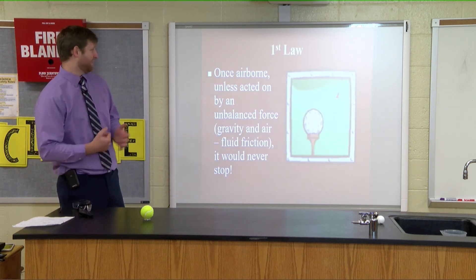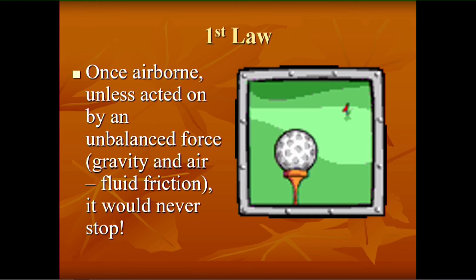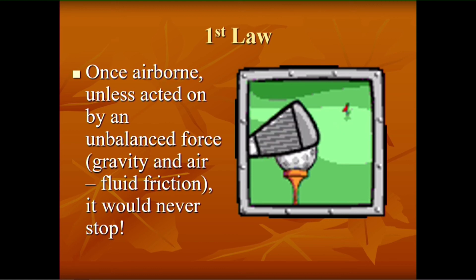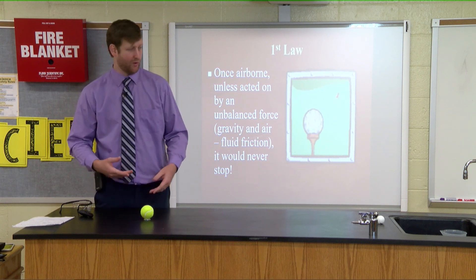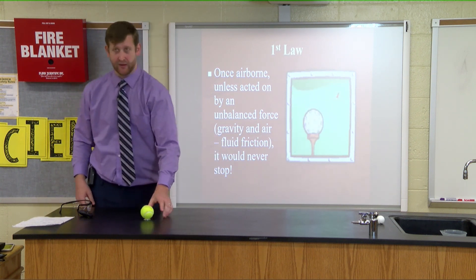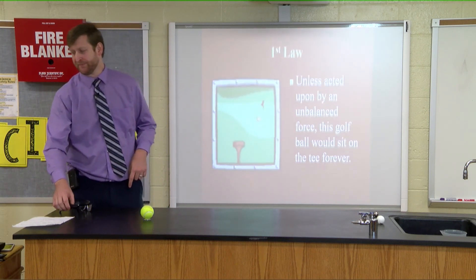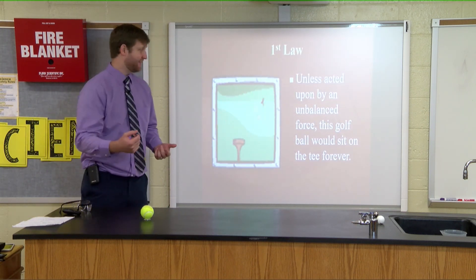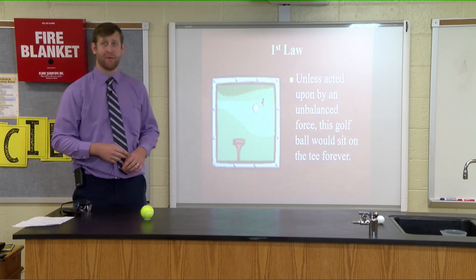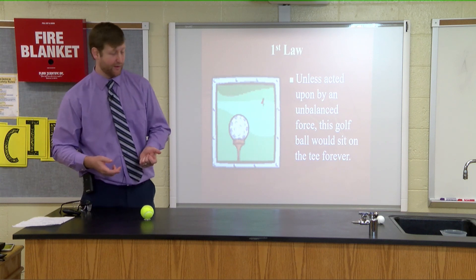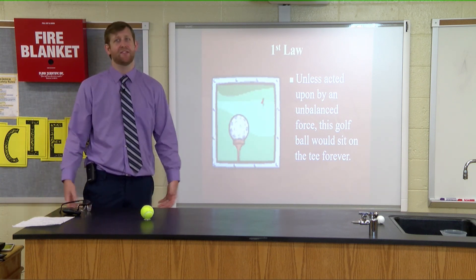Once this golf ball is airborne, it's going to keep going forever unless acted upon by an unbalanced force. Unbalanced forces are things like gravity, air, or fluid friction. We do experience gravity on Earth — that's one reason a ball stops. We also experience friction. Unless this tennis ball is acted upon by a push or pull, it's just going to sit on the table forever — it's not going to move.